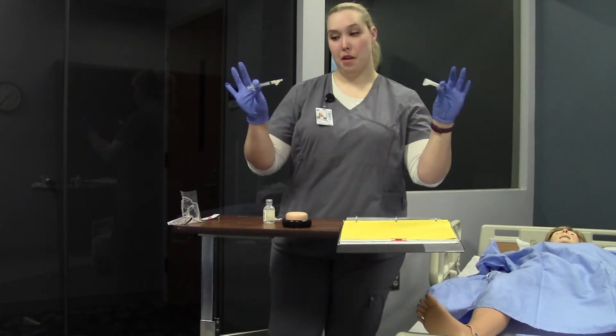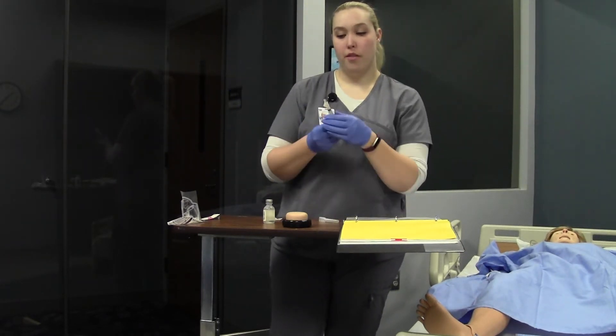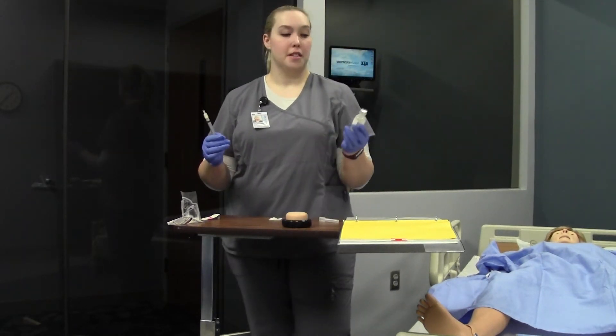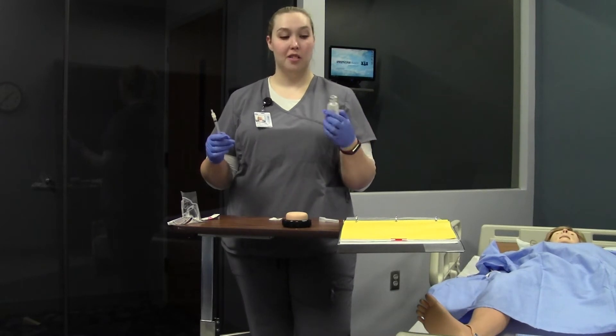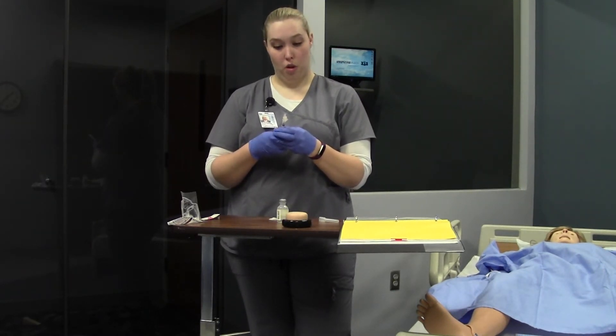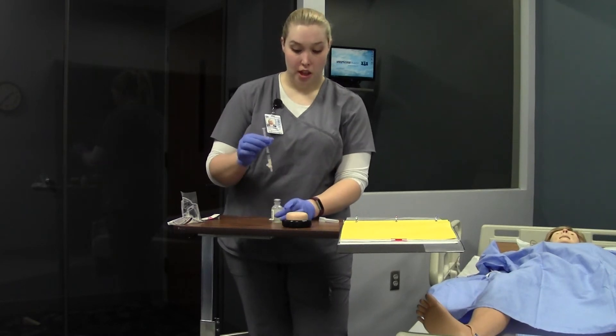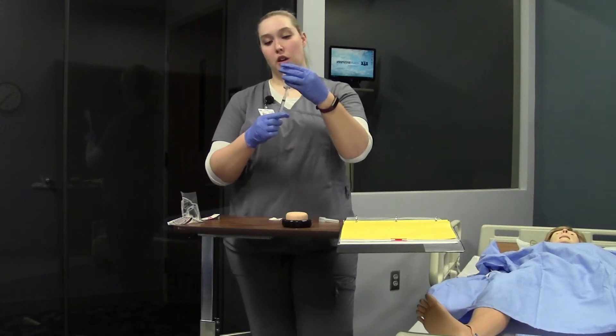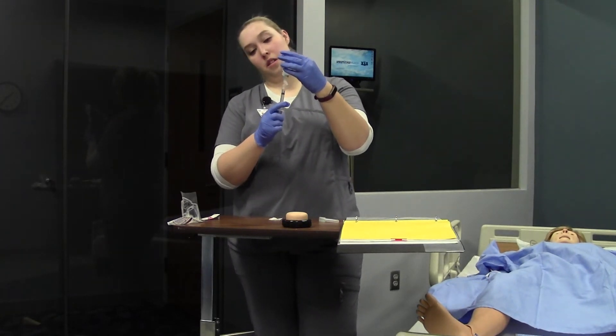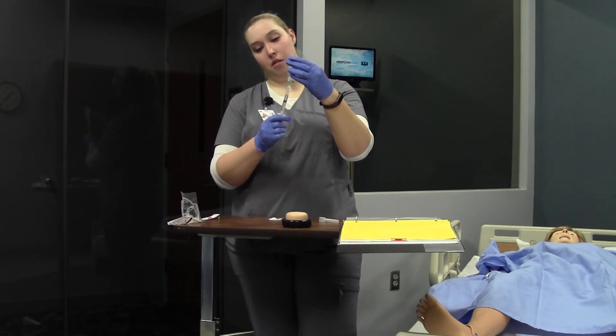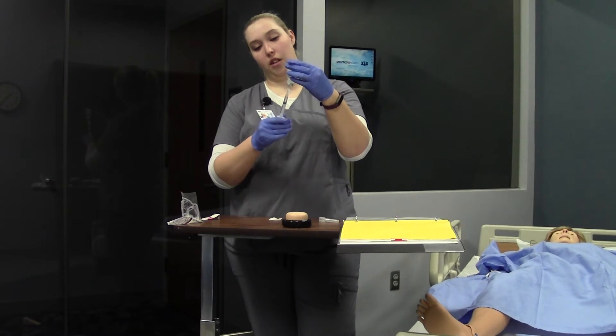And then when I'm uncapping my needle, always pull away from me. 5,000 units sub-Q. I'm going to check my label. It says 5,000 units per mL, so that means I'm going to draw up one milliliter. So one milliliter of air. The top of my vial is cleaned already. I'm going to inject and draw up one milliliter. I'm going to draw just a little past due to the fact that I have a little air bubble in there.